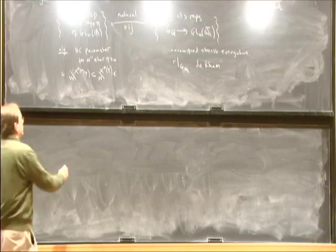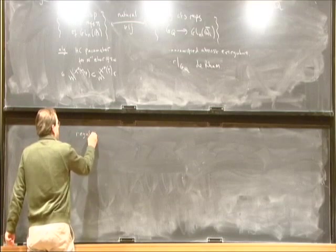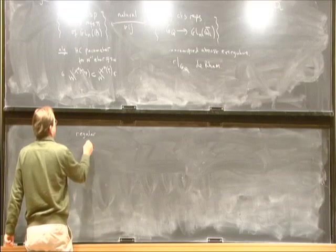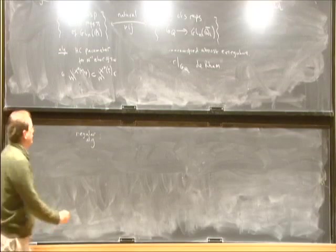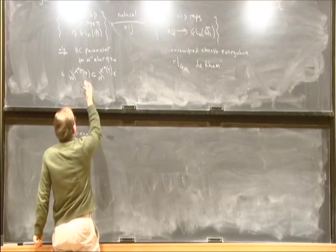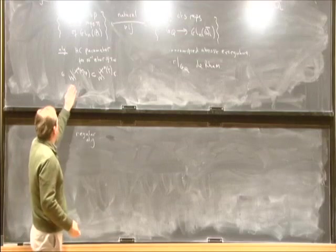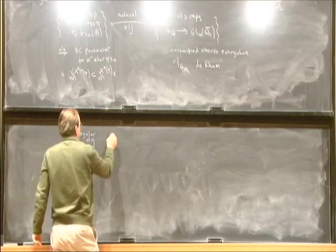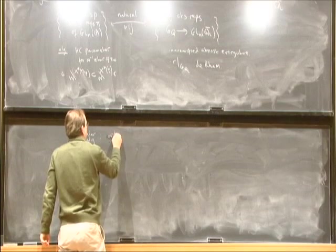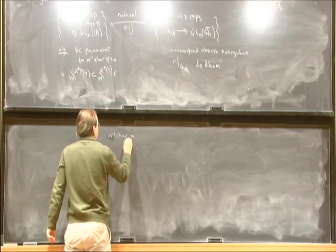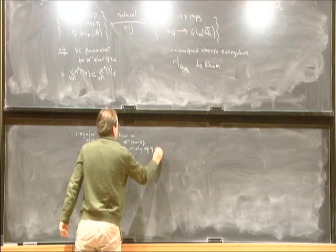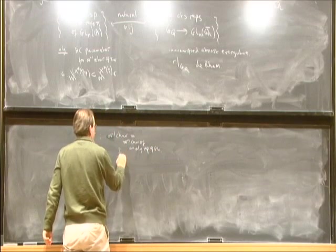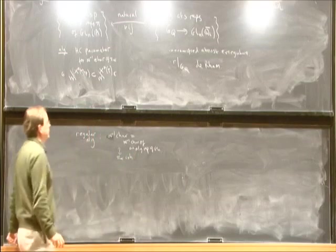There are special cases in which we know quite a lot, when we impose two additional assumptions. We ask not just for algebraicity but regular algebraicity. On the automorphic side, it means the infinitesimal character doesn't lie on any of the walls — the infinitesimal character equals the infinitesimal character of an algebraic representation of GL_N, or equivalently that pi-infinity is cohomological.